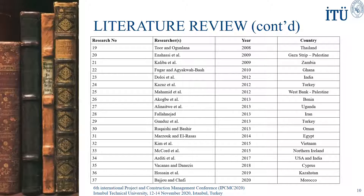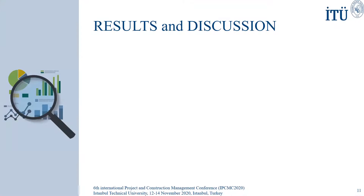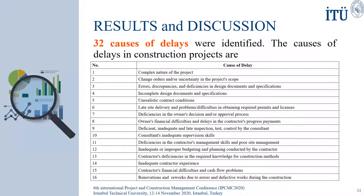The main objective of the study conducted by RDT was not to rank the importance degree of delays. However, they summarized the literature to achieve their objective, and that is why we added this study to our list. From those 37 studies, we identified 32 causes of delays. I will not read all of these 32 causes due to time limitation.